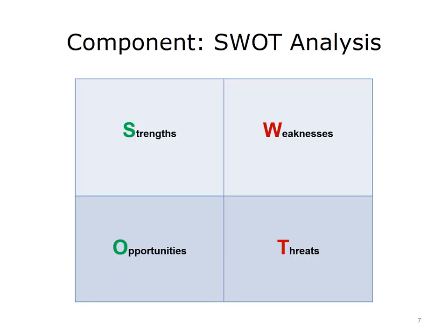The second component part of the IT plan that you are likely to find is a SWOT analysis. SWOT is an acronym for Strengths, Weaknesses, Opportunities, and Threats. The analysis of the organization is taken across each of the four categories. Let's look at each of them individually.